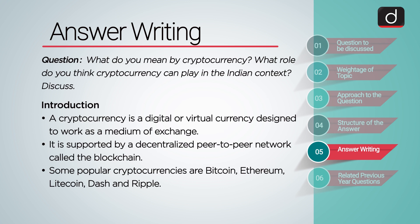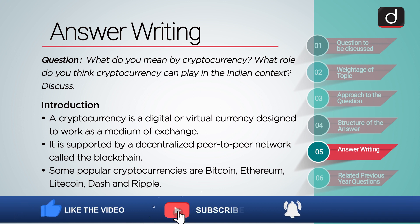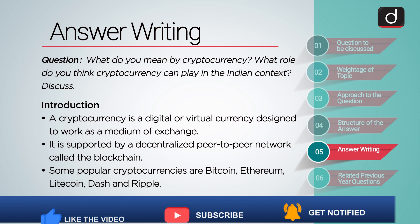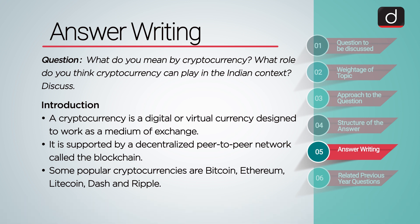A cryptocurrency is a digital or virtual currency designed to work as a medium of exchange. It uses cryptography to secure and verify transactions as well as to control the creation of new units of a particular cryptocurrency. It is supported by a decentralized peer-to-peer network called the blockchain. Blockchain technology ensures that all transactions are recorded in a public financial transaction database. Some popular cryptocurrencies are Bitcoin, Ethereum, Litecoin, Dash, and others. Recently, electric automaker Tesla has invested around $1.5 billion in Bitcoin and plans to begin accepting the digital currency as payment for its vehicles.